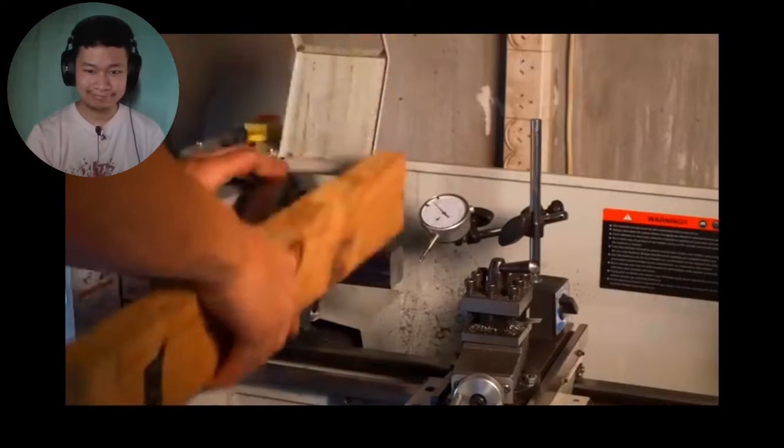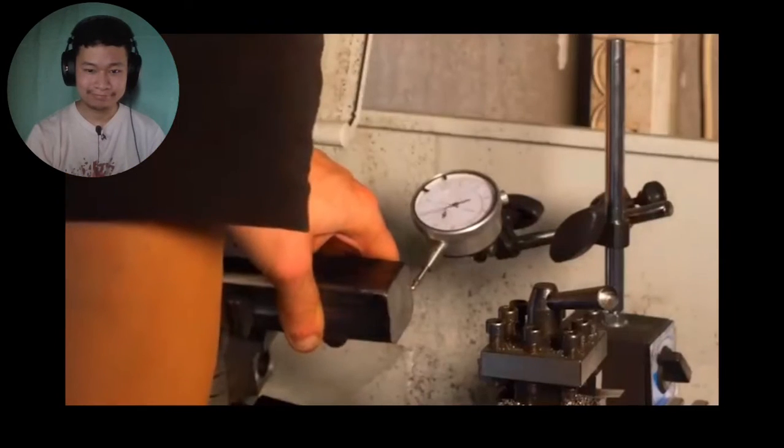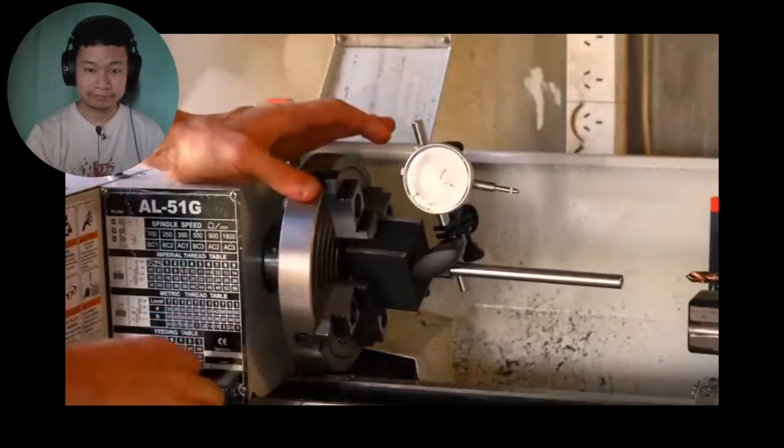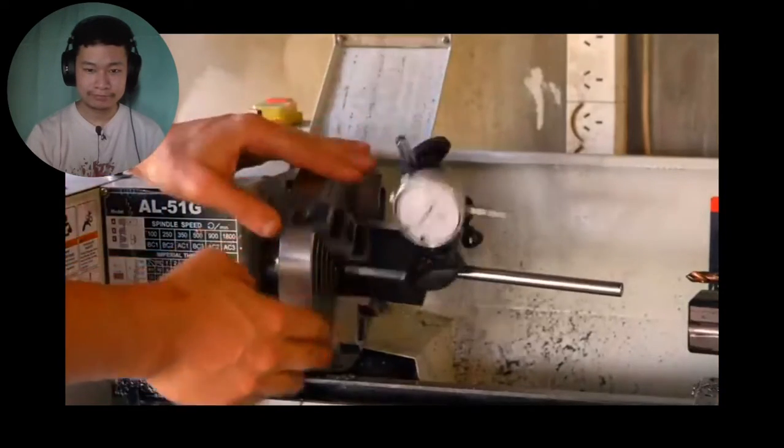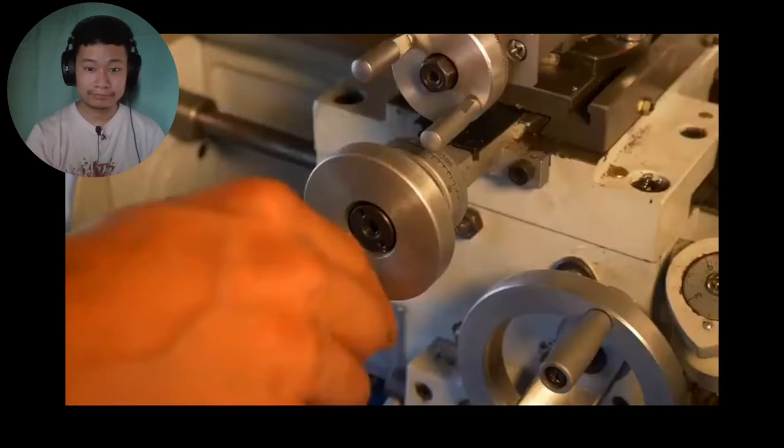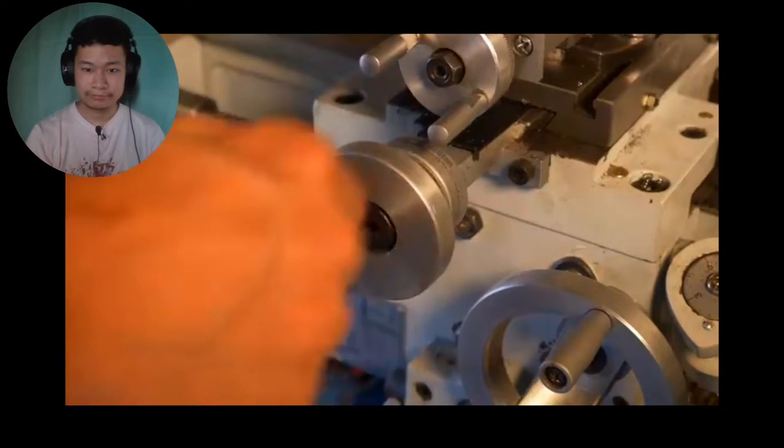I feel like nothing I do makes any sense. I hit this side, and now this side has moved in. And then I turn this thing, and now the whole thing's the wrong way. But after mucking around with it for ages, I seem to have gotten the piece roughly in the middle. So I brought in the tool to do a cut across the face.